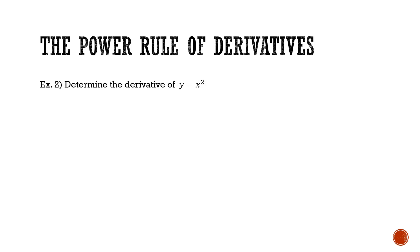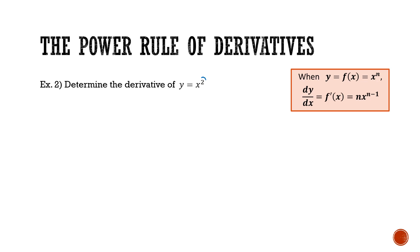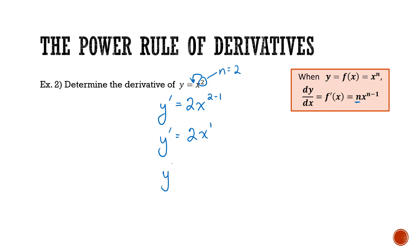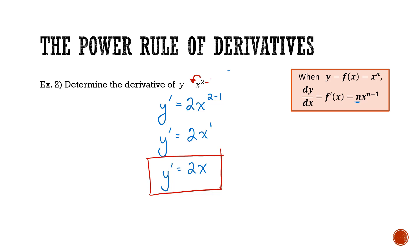Let's try another example: determine the derivative of y = x². This time our exponent n is equal to 2. So y prime is equal to 2x to the power of 1, and we just leave it as 2x. So really what we're doing is taking the exponent, making it the coefficient, and subtracting 1 from that original exponent.